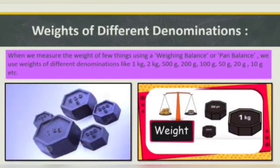These are weights of different denominations. When we measure the weight of few things using a weighing balance or pan balance, we use weights of different denominations — like 1 kilogram, 2 kilograms, 500 grams, 200 grams, 100 grams, 50 grams, 20 grams, 10 grams, etc.